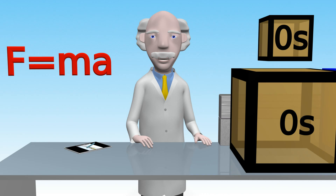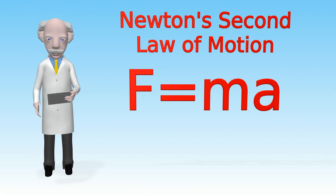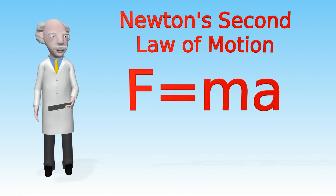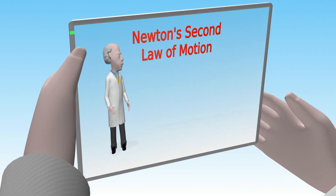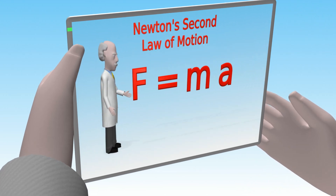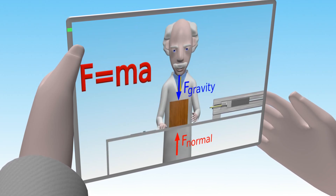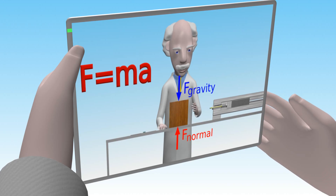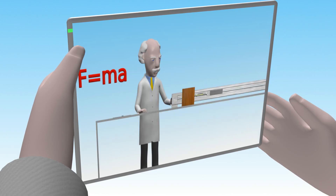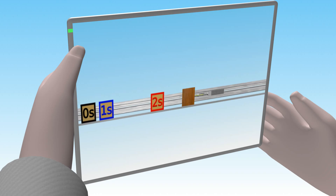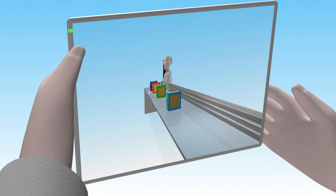So there we are. That's how you use Newton's second law to control the motion of an object. Let's review what we've learned about Newton's second law of motion. The law is expressed as force equals mass times acceleration. The force is the sum of the forces on an object in a given direction. If this equals zero, then the acceleration of the object is zero.